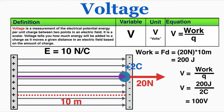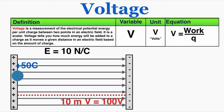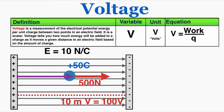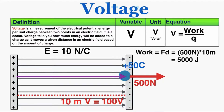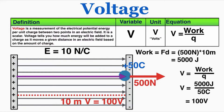That means 100 joules will be added to the object for every coulomb of charge it has — here 200 joules were added, 100 for each unit of charge. To prove this is charge-independent, I'll use positive 50 coulombs. The field pushes it with 500 newtons, the work done is 5,000 newtons times 10 meters, and dividing by the charge shows the voltage stays constant at 100 volts. It doesn't matter which charge we test — the field has this inherent property along that specific distance.